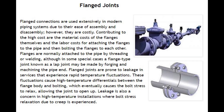Number 6: Flanged Joints. Flanged connections are used extensively in modern piping systems due to their ease of assembly and disassembly; however, they are costly. Contributing to the high cost are the material costs of the flanges themselves and the labor costs for attaching the flanges to the pipe and then bolting the flanges to each other. Flanges are normally attached to the pipe by threading or welding, although in some special cases a flange type joint known as a lap joint may be made by forging and machining the pipe end.